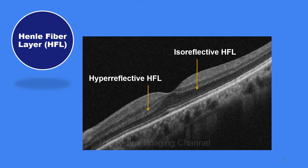Let us look at this OCT line scan, specifically the ONL on both sides of the fovea. We can see that on the temporal side the ONL is completely dark without any distinction. Whereas on the nasal side of the fovea we see a hyperreflective band on the inner aspect of the ONL. This is the hyperreflective Henle fiber layer, visible on the nasal side but isoreflective on the temporal side.